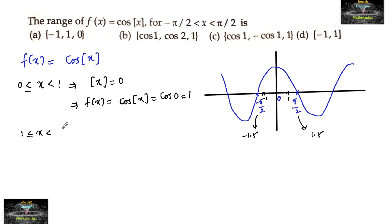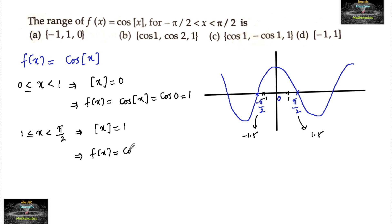From 1 ≤ x < π/2, the step value ⌊x⌋ = 1, and hence f(x) = cos(⌊x⌋) = cos(1).